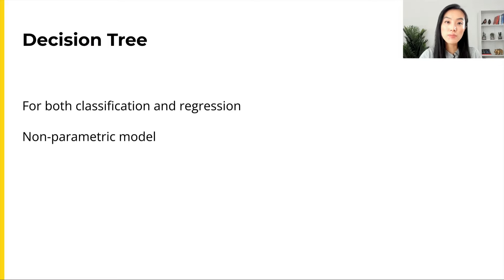Decision trees is a commonly used machine learning model and it can be used for both classification and regression tasks. Decision trees are non-parametric models, meaning the complexity of the model grows with the number and size of the training data.